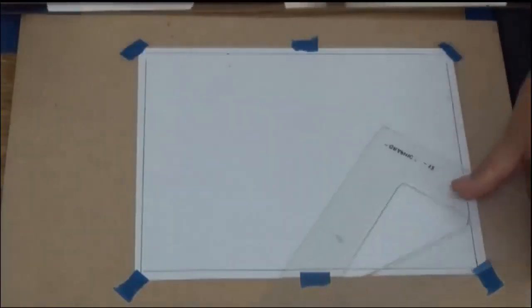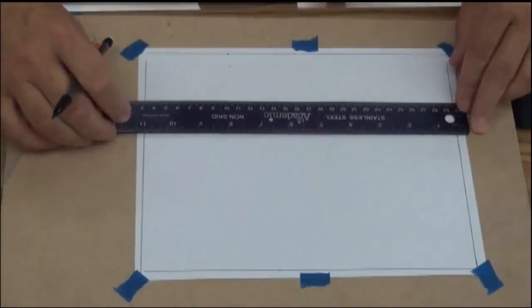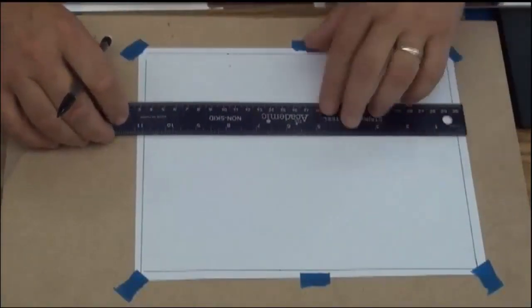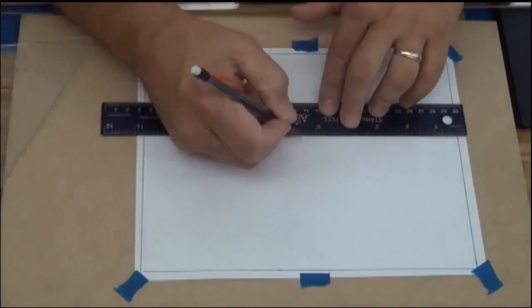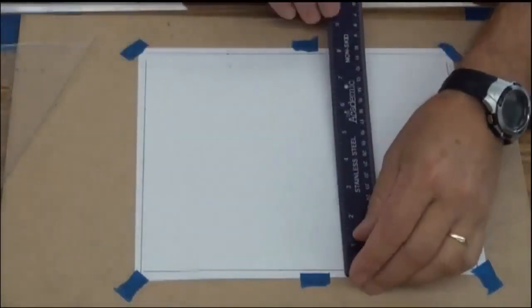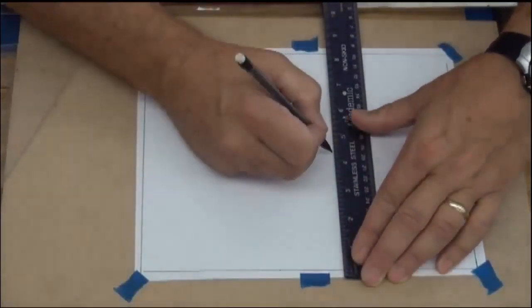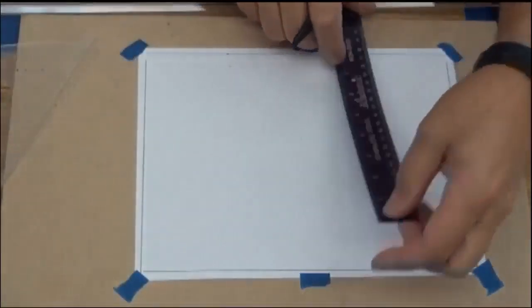Now with that done, I'm going to stop for a second, go back to my ruler, and I'm going to measure half of 8.5 by 11. So if I take half of 11, that should be 5.5. I'll make myself a mark right there at 5.5. Half of 8.5 is going to be 4.25, so I'll make myself a mark there as well.